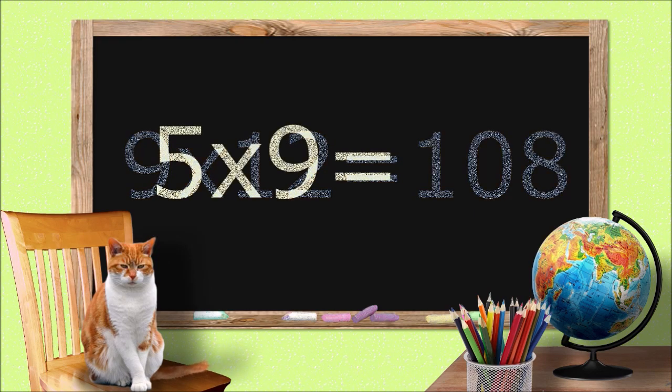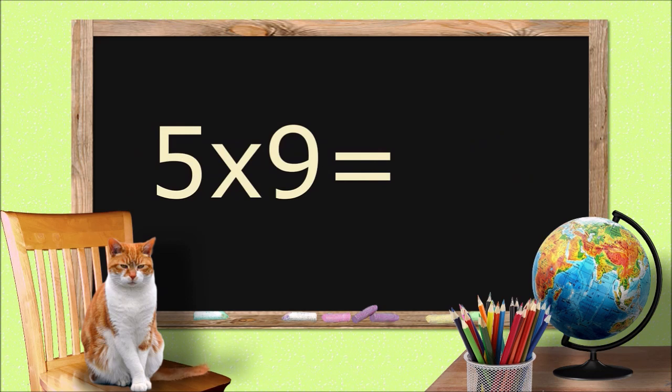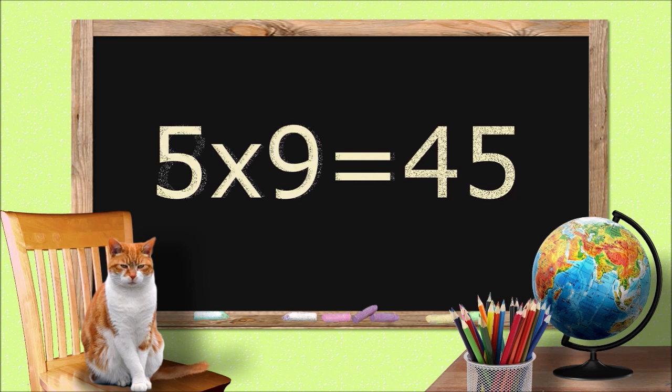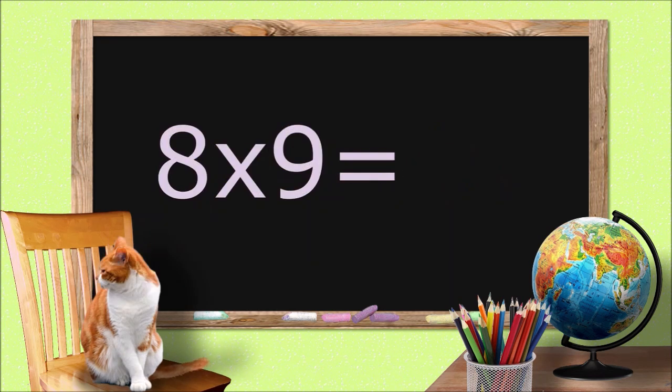5 times 9 equals 45. 8 times 9 equals 72.